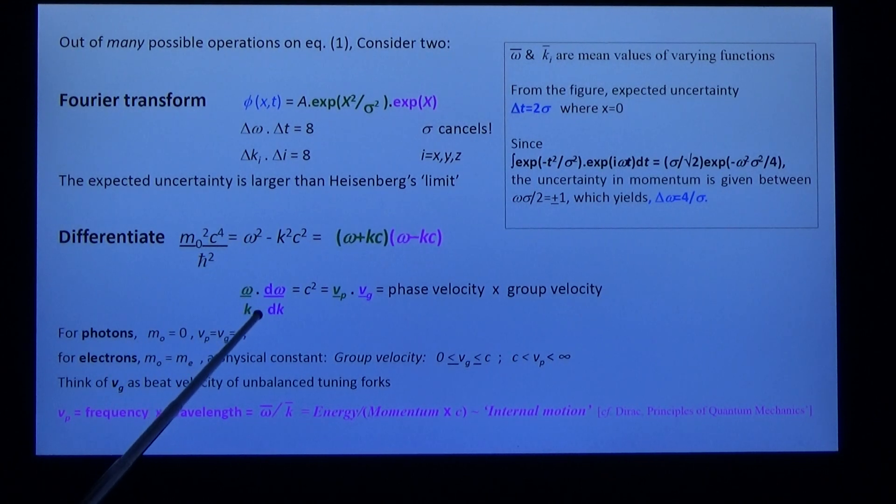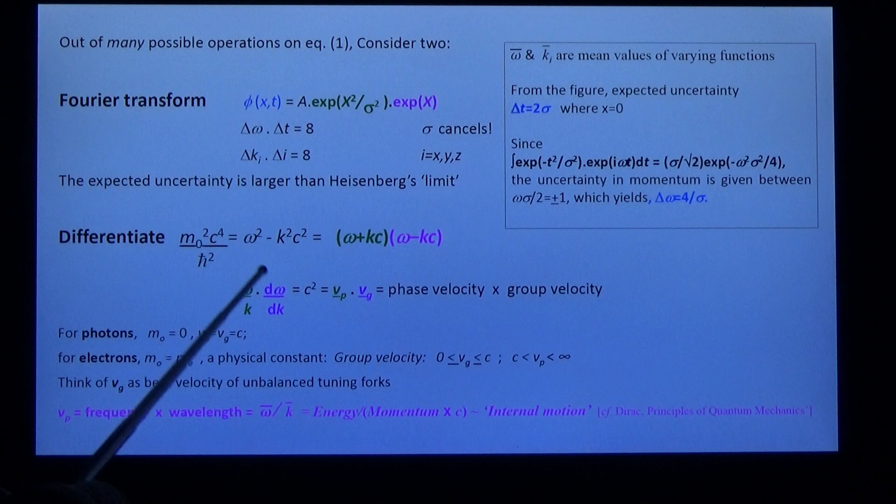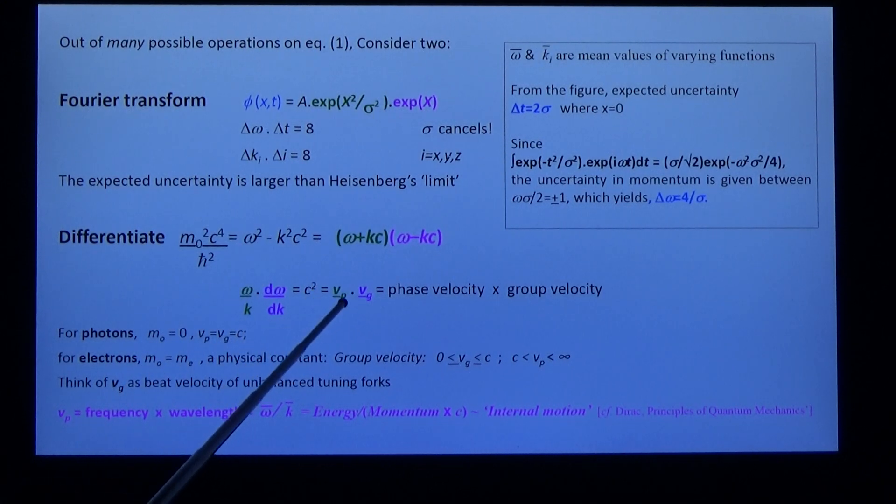Omega over k multiplied by d omega by dk is equal to c squared. Omega over k is the phase velocity, d omega by dk is the group velocity, and we'll say more about those in a moment.